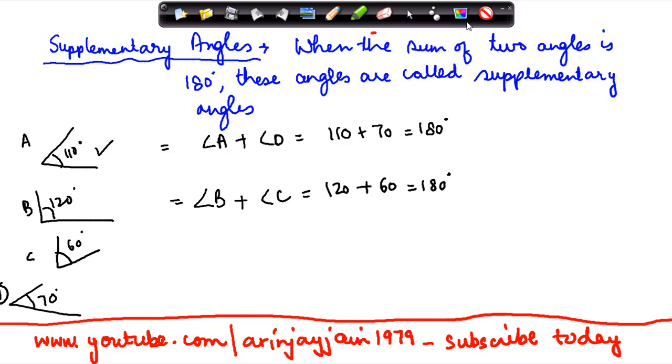So therefore, what we say is that angle A and angle D are supplementary angles, angle B and angle C are supplementary angles, and angle C supplements angle B and vice versa.